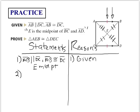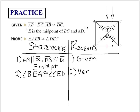The first step is always the hardest. Looking at the triangles in the diagram, angle BEA is congruent to angle CED — we know this because of the Vertical Angles Theorem.